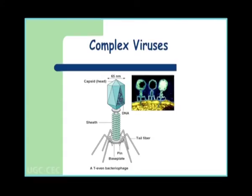The fourth group of viruses is called complex viruses. This group includes bacteriophages which have complex structure and complex symmetry. The best example is the T-even bacteriophage. This phage has a capsid called the head, to which are attached structures like a helical tail sheath, base plate, tail fibers and pins. This was about classification of viruses. Thank you.